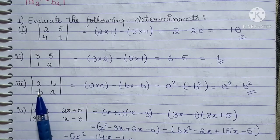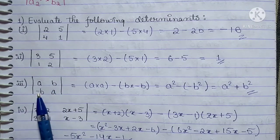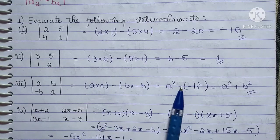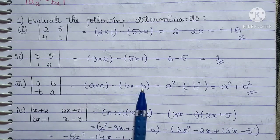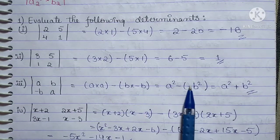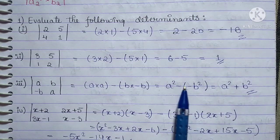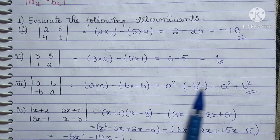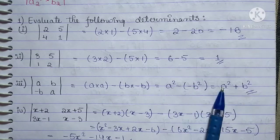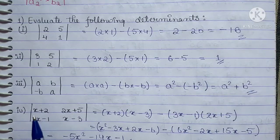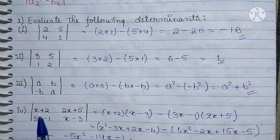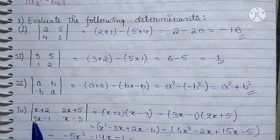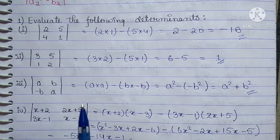Next part: a into a minus b into minus b — this gives a² minus (minus b²). Opening the bracket, minus minus becomes plus, so we get a² plus b². That is the answer for this part. Fourth part: (x+2)(x−3) minus (3x−1)(2x+5).